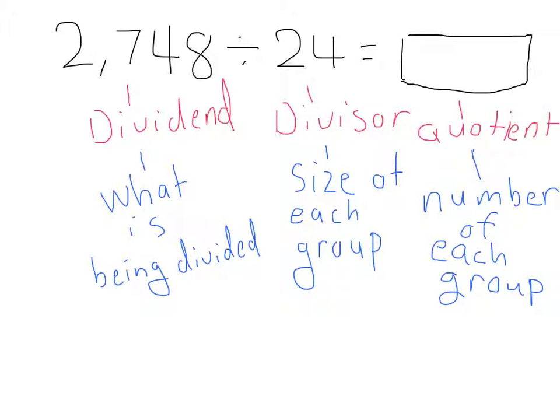This is a grouping situation because the divisor, 24, is the size of each group. And the quotient, the answer, is the number of groups.